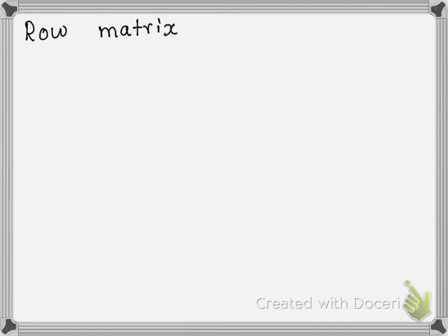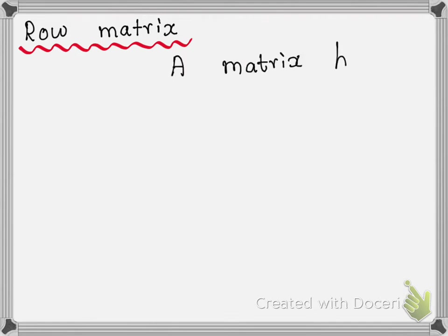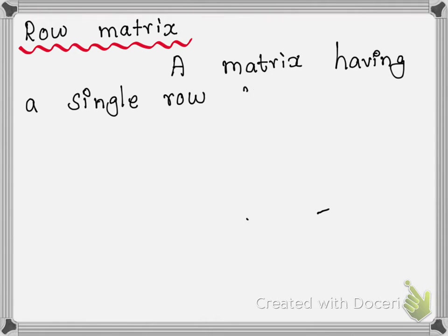Dear students, we will talk about row matrix, column matrix, and square matrix. First, row matrix. Definition: a matrix having a single row is called a row matrix.